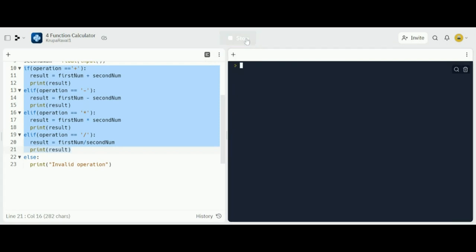This is how the code works. The first number is going to be 12. The operation will be division, and it's going to be divided by 2, and the result is 6, which is correct.